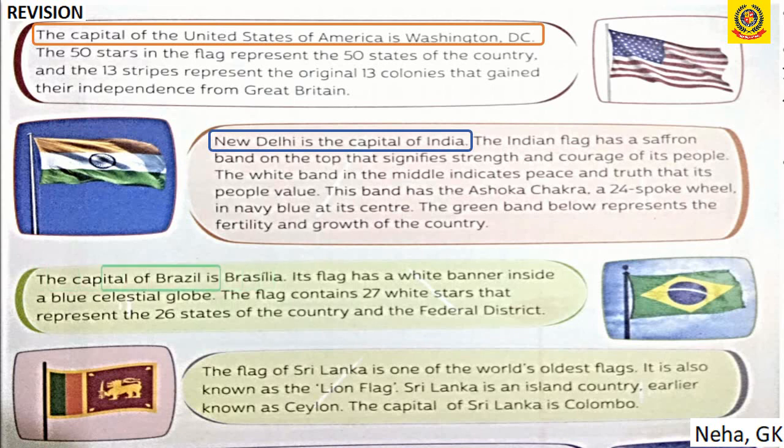The capital of Brazil is Brasilia. The flag has a white banner inside a blue celestial globe, and it contains 27 white stars that represent the 26 states of the country and the federal district.